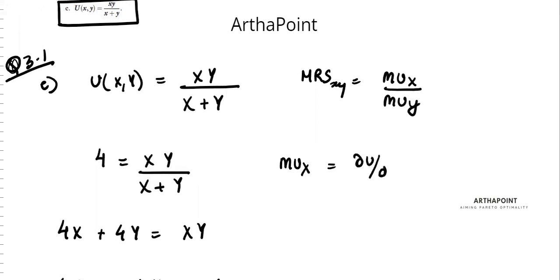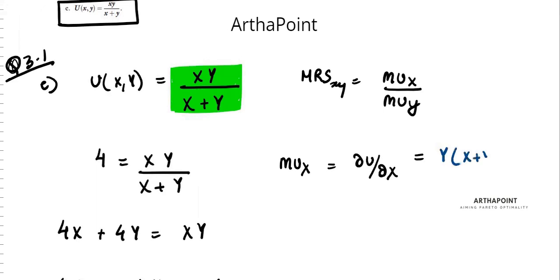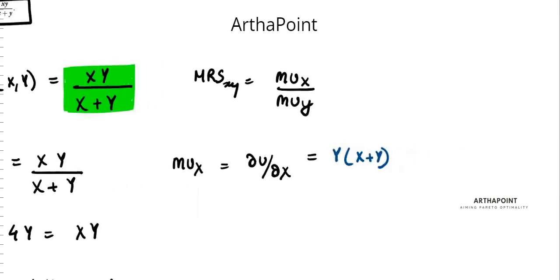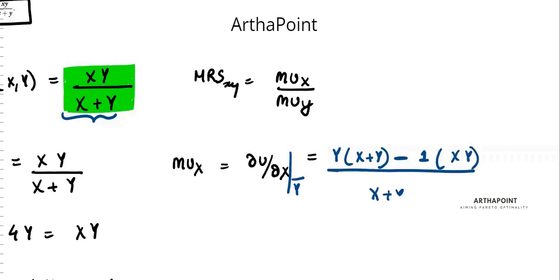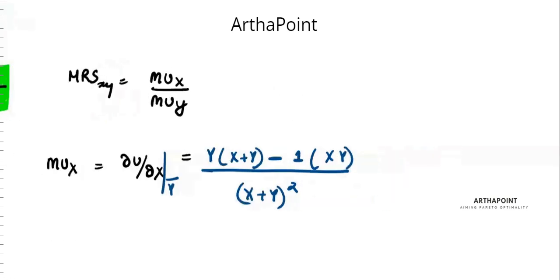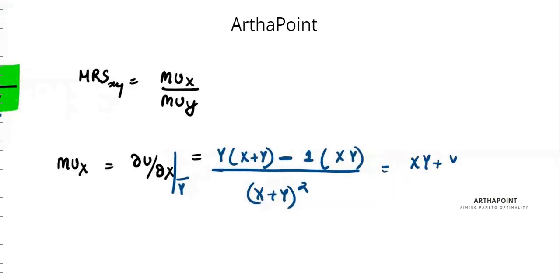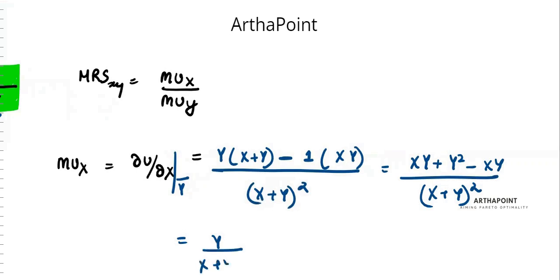MUx is how utility changes as x changes. Differentiating with respect to x: differentiation of the numerator into denominator as it is, minus differentiation of the denominator holding y constant, into numerator as it is, upon denominator squared. So I get xy plus y squared minus xy upon x plus y squared, which gives y squared upon x plus y squared.